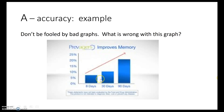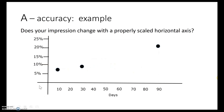Here's another example involving a drug that supposedly improves memory. The y-axis increases by 5% starting at 0, but the x-axis shows uneven time increments: 5 days, 30 days, and 90 days. Of course we'd expect much more improvement over 90 days versus just 5. When the same information is scaled properly with even increments on the horizontal axis, the change doesn't seem nearly as extreme — and that is a much better way to present this data.